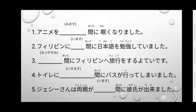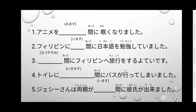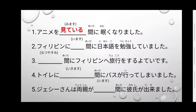Itchibang. Anime o [blank] aida ni, nemoku narimashita. For example, the anime is Naruto or One Piece. Nemoku narimashita means to become sleepy. Since the verb above is mimas (to watch), we use present progressive — anime o miteru aida ni, nemoku narimashita. In English: While he or she was watching anime, he became sleepy.